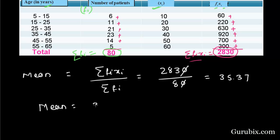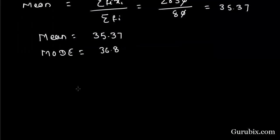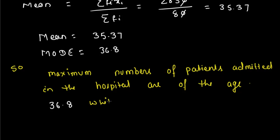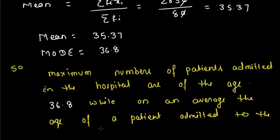Hence, mean is equal to 35.37 and mode is equal to 36.8. Now, we have to compare mode and mean. So, maximum number of patients admitted in the hospital are of the age 36.8, while on average the age of the patient admitted to the hospital is 35.37.